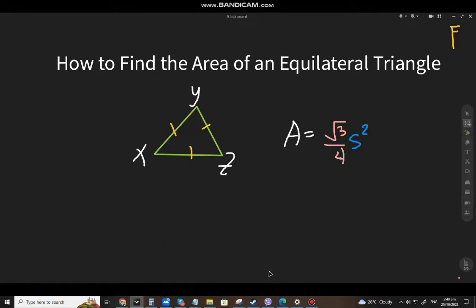So how to find the area? Our area is square root of 3 over 4, and then you multiply it by s squared. So when you know one side, you will know the area of the equilateral triangle. For example.